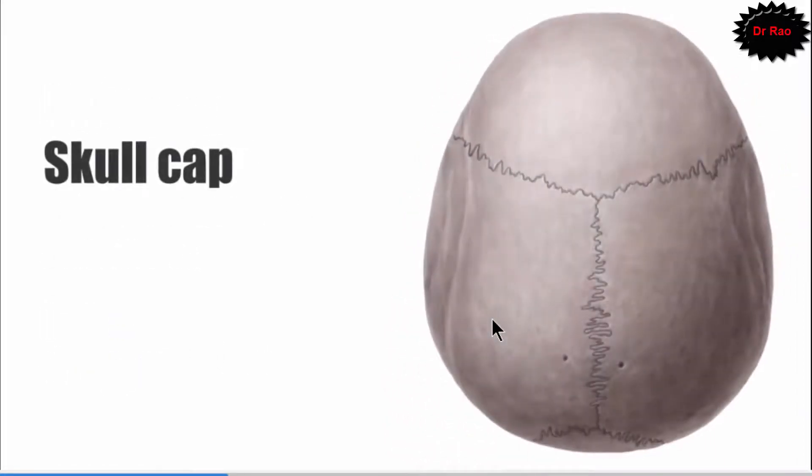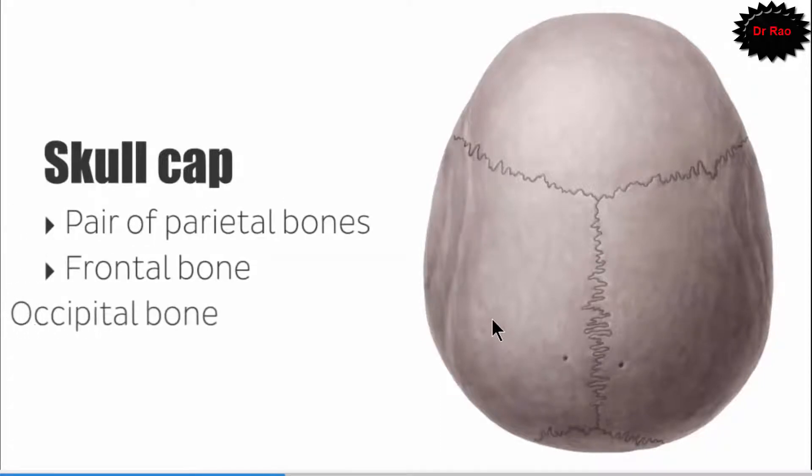Now the skull cap, if we see, consists of four bones: a pair of parietal bones that are lateral from the side, the frontal bone from the front side, and the occipital bone that is involved a little part only from the back.